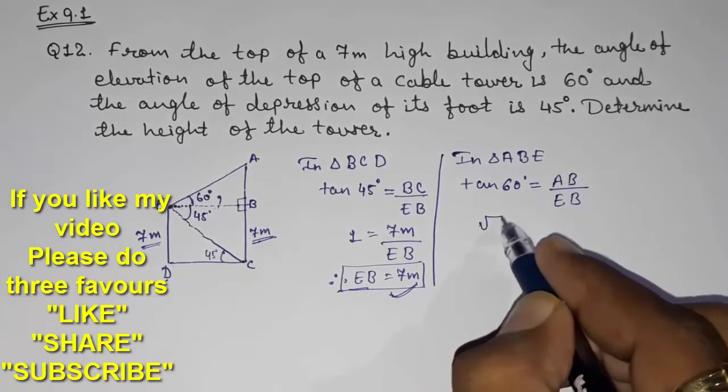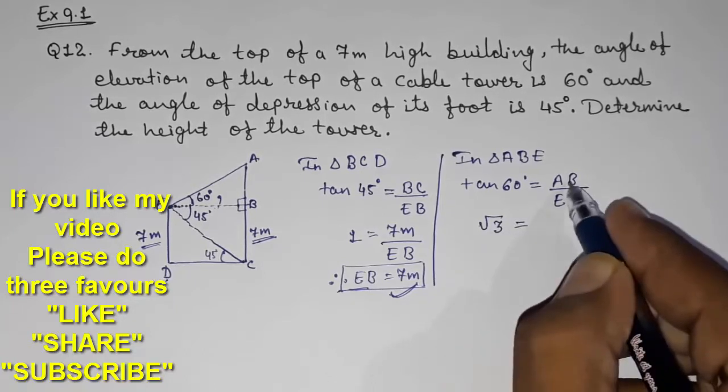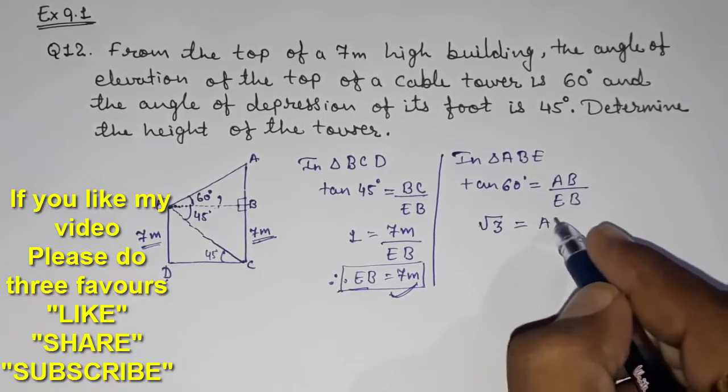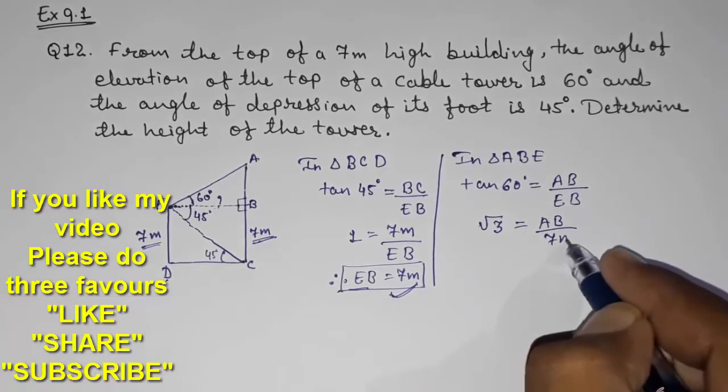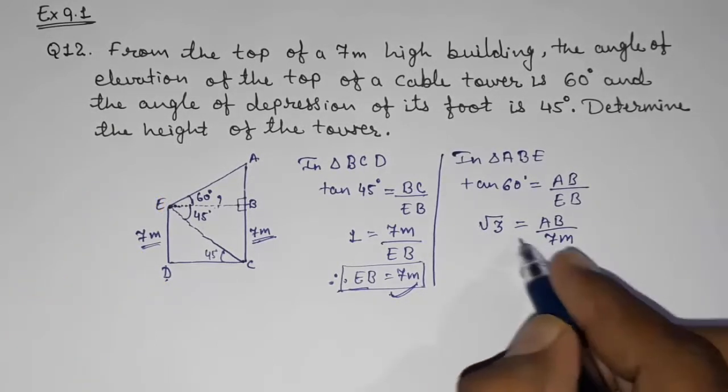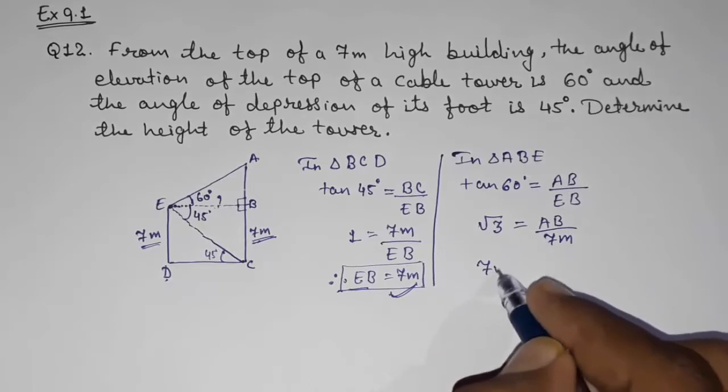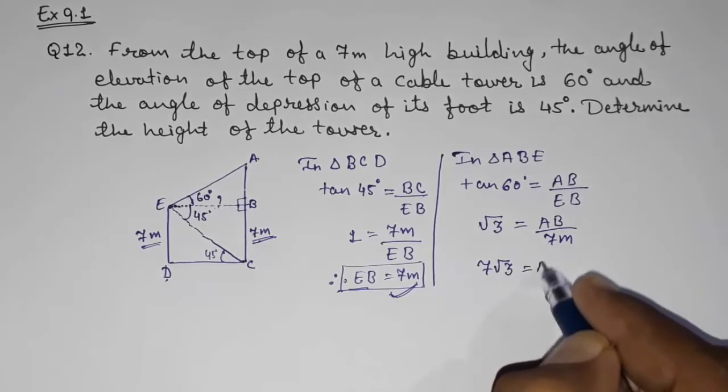Now tan 60, we know the value of tan 60, that is root 3. AB that we want to find out. EB that we had found out here, so 7 meters. So take it here. So our AB will be 7 root 3 meters.